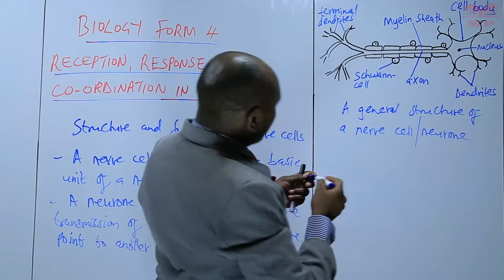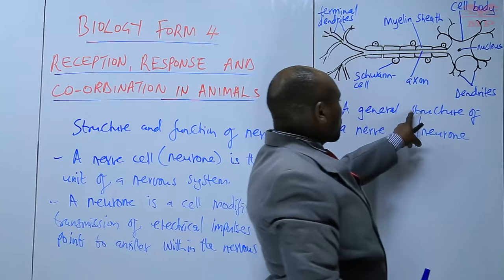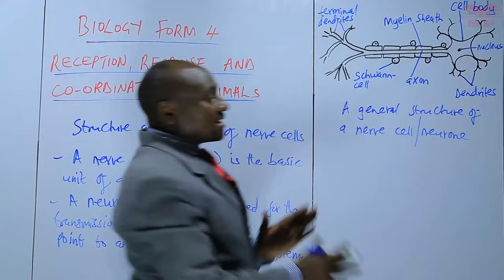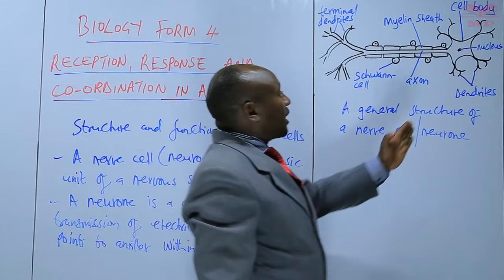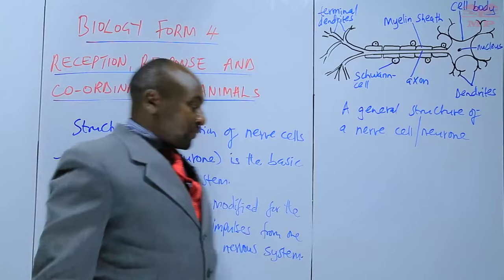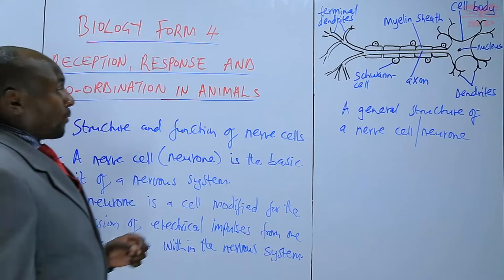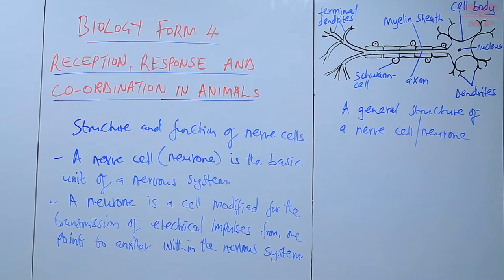We have labeled more or less all the parts that make the general structure of a nerve cell. Now, why is this nerve cell elongated? It is elongated to enable transmission of nerve impulses — that's why it's a long cell, modified for the transmission of electrical impulses within the nervous system. We will now look at those various parts that constitute the nerve cell and their functions.